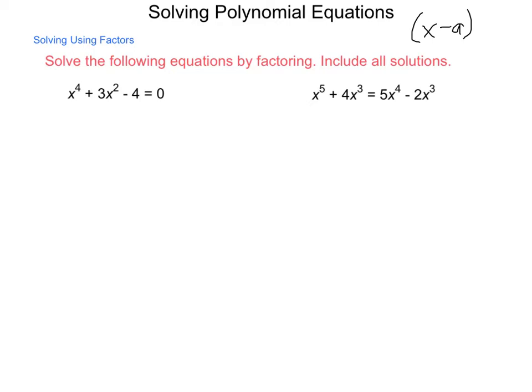Our first one: x to the fourth plus 3x squared minus 4 equals zero. This is what is called a quadratic-like equation because our exponents follow a pattern of a value, half that value, and then no variable at all. So we can treat it as if it is a quadratic. Do we know two numbers that multiply to negative 4 and add to 3? And the answer is yes.